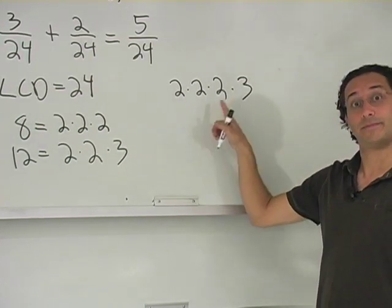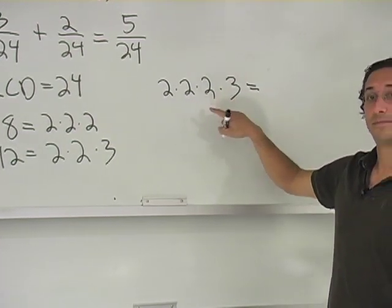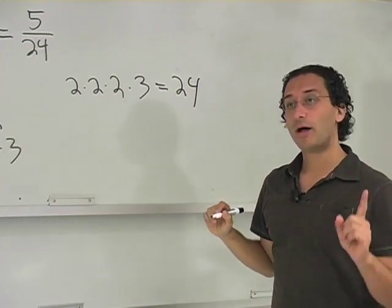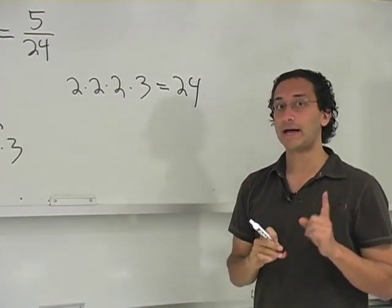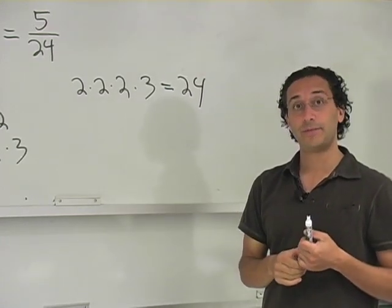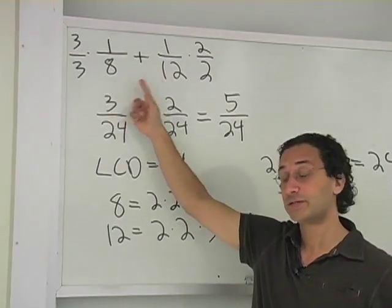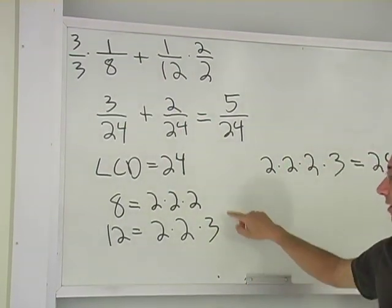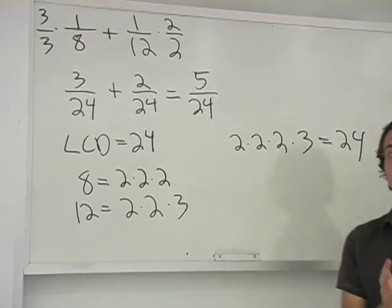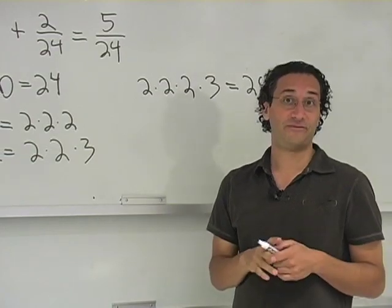So the process we're going to follow to find the least common denominator, the smallest number that those both can divide into, is we're first going to factor them, which we did here, and then we're going to find the smallest possible number that will work for those given factors.